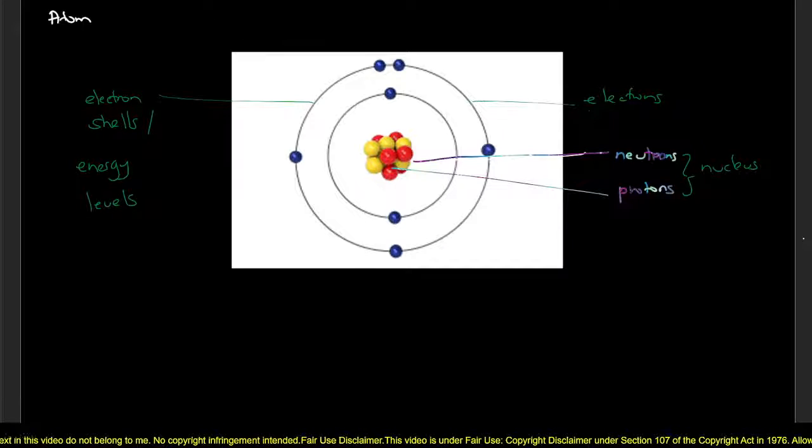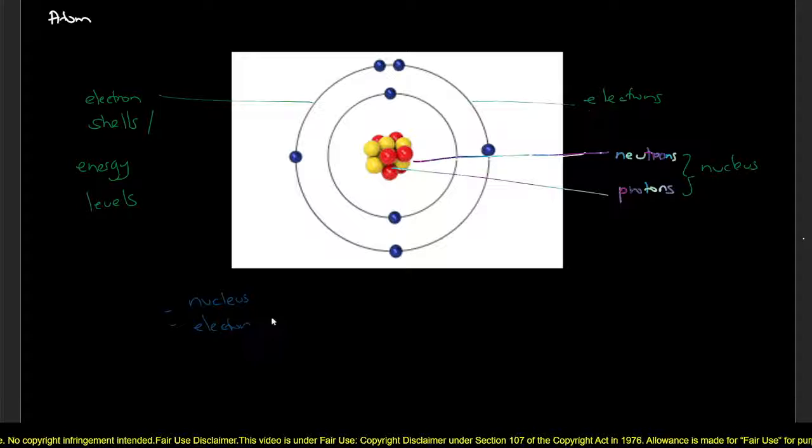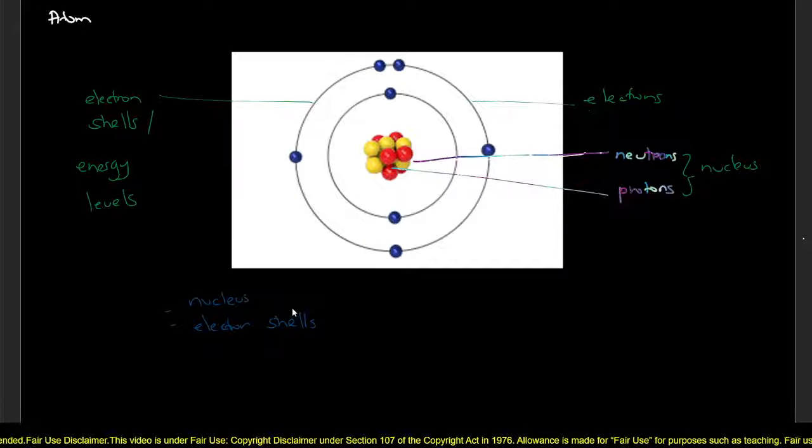So far, just to summarize, the atom consists of a nucleus and electron shells, where the nucleus consists of neutrons and protons and the electrons are found in electron shells.